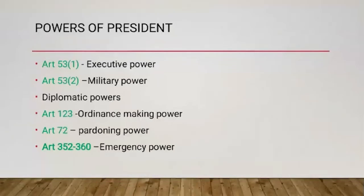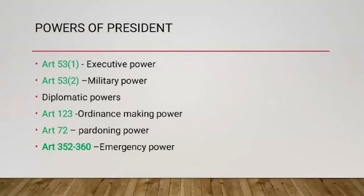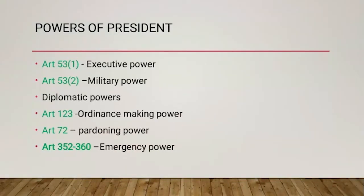Regarding legislative powers including ordinance-making power under Article 123, the President has the power to summon and prorogue Parliament and is bound to summon Parliament within six months from the last sitting of the former session. According to Article 108, if there is a conflict between two Houses of Parliament over an ordinary bill, the President can call a joint sitting of both houses to resolve the deadlock. An ordinance promulgated under this article shall have the same force and effect as an Act of Parliament and shall be laid before both Houses of Parliament, and shall cease to operate at the expiration of six weeks from the reassembly of Parliament.